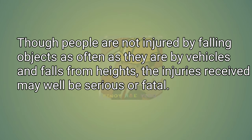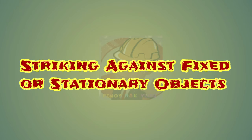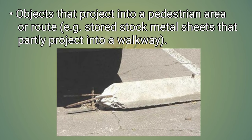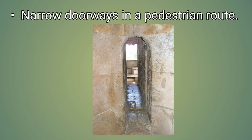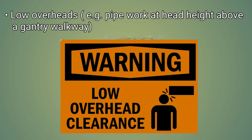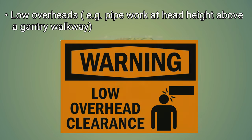Though people are not injured by falling objects as often as they are by vehicles and falls from heights, the injuries received may well be serious or fatal. Striking against fixed or stationary objects. Typical hazards: objects that project into a pedestrian area or route, for example stored stock or metal sheets that partly project into a walkway. Narrow doorways in a pedestrian route. Low overheads, for example pipework at head height above a gantry walkway.